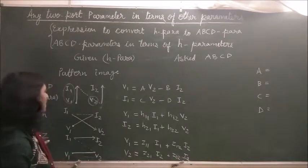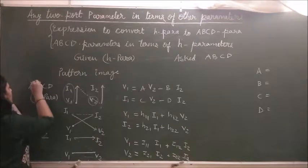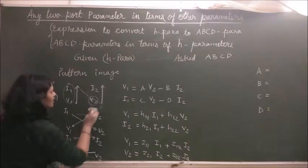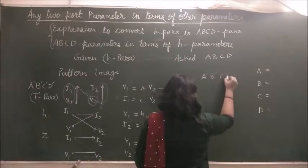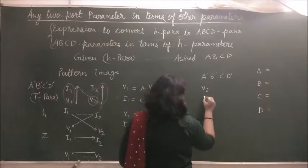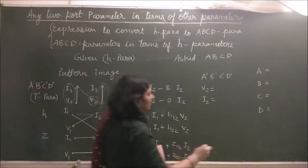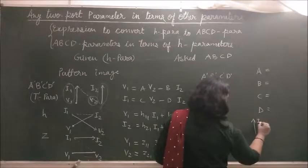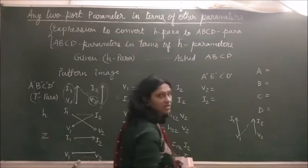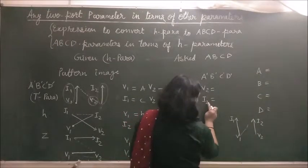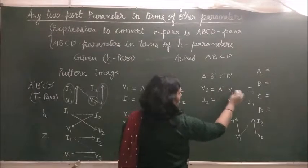This is the way to write three basic parameters; the rest of three are reverse of them. For A', B', C', D' (T' parameter), we first draw V2 and I2. Our equation starts from V2, then I2, then comes back to V1 and moves to I1. So V2 and I2 come on the left-hand side, then V1 comes in the first term and I1 in the second term. Write down the parameters with a negative sign — here we take I1 as negative.